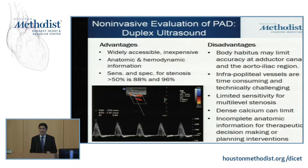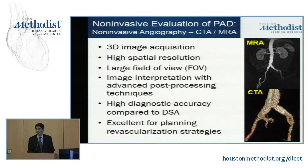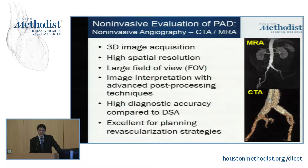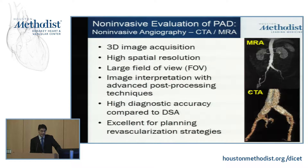That leaves us with CT and MRA, which are exceptional tests. Unlike other tests, these are three-dimensional techniques — we can spin arteries around in whatever plane we want to get a true appreciation of the vessels. They have incredibly high spatial resolution, allowing us to see very small arteries. They have large fields of view, so not only can we see the arterial structure, but also the structures they supply. Image interpretation has been simplified with advanced post-processing software that allows us to manipulate this data like never before.